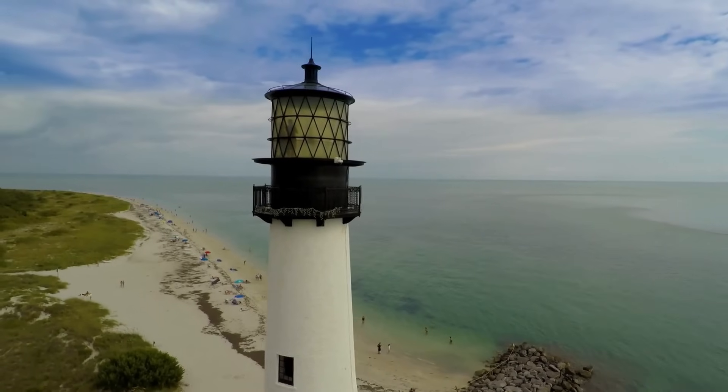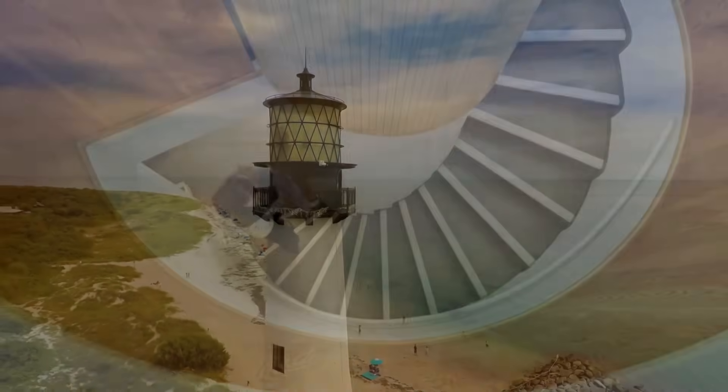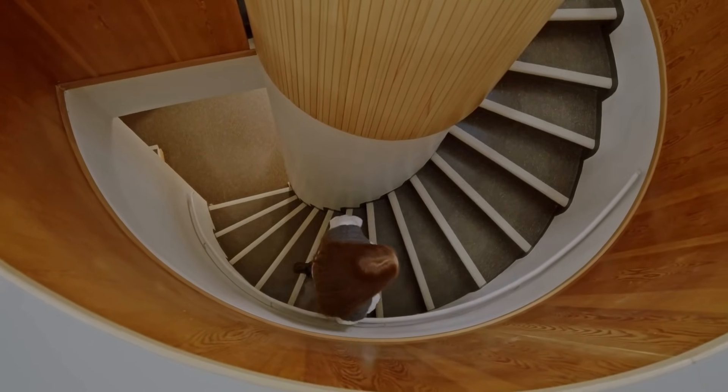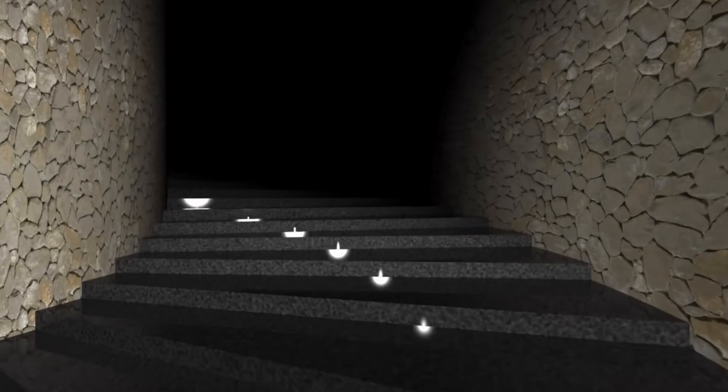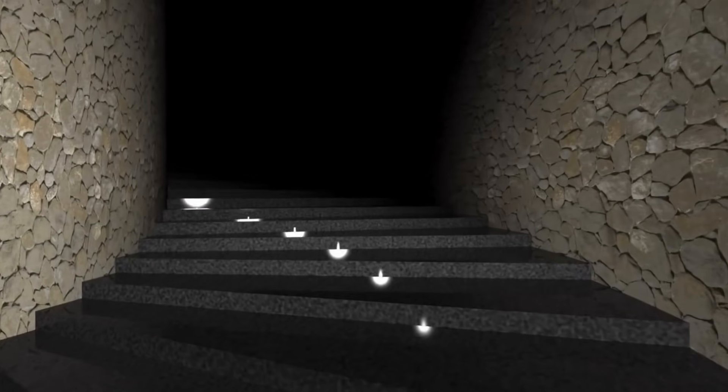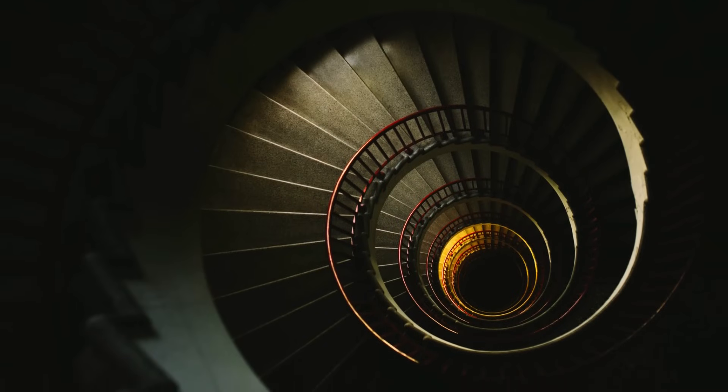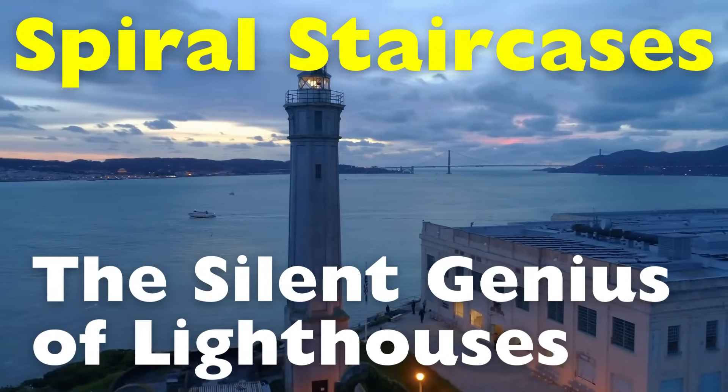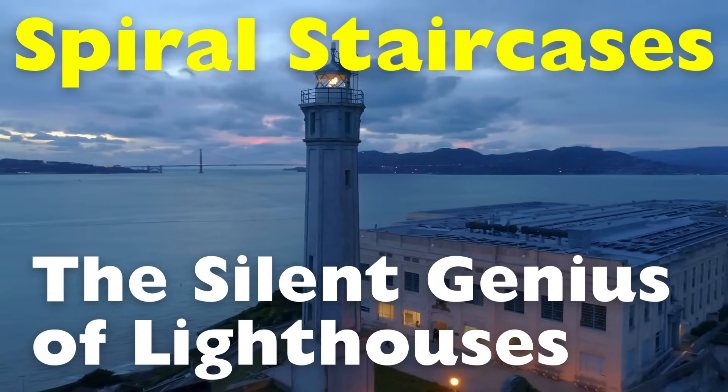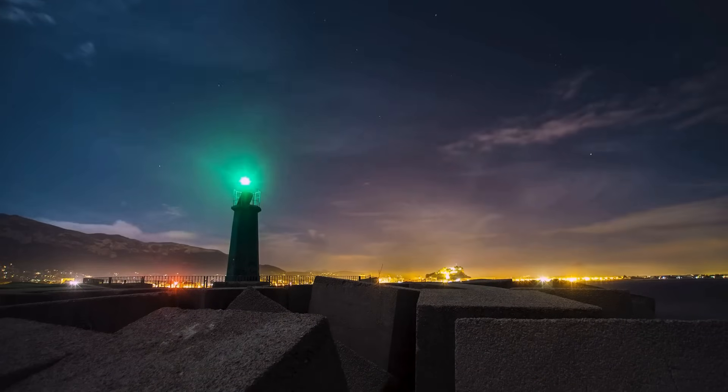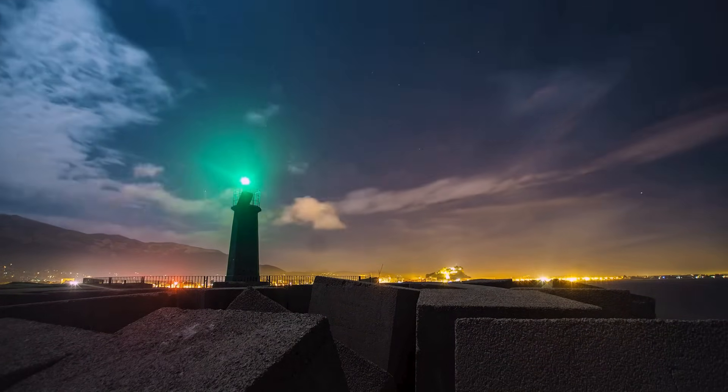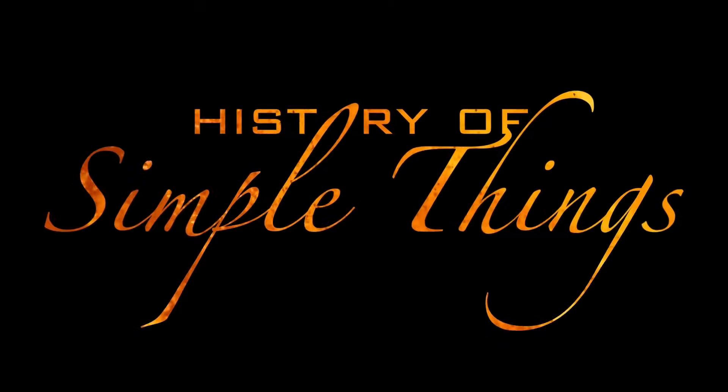Have you ever stood at the base of a lighthouse, looked up, and wondered why the staircase winds up in a tight spiral instead of just going straight up? It's one of those little details we often take for granted, but once you start asking, you realize there's more to it than just aesthetics. The spiral staircase inside a lighthouse is a design born from necessity, safety, efficiency, and maybe a little bit of poetic beauty. Let's climb up that spiral right here on History of Simple Things.